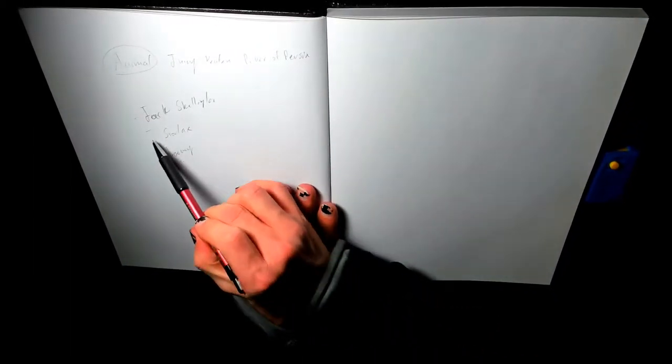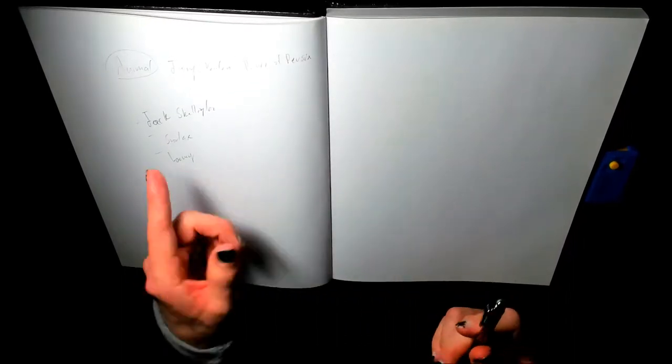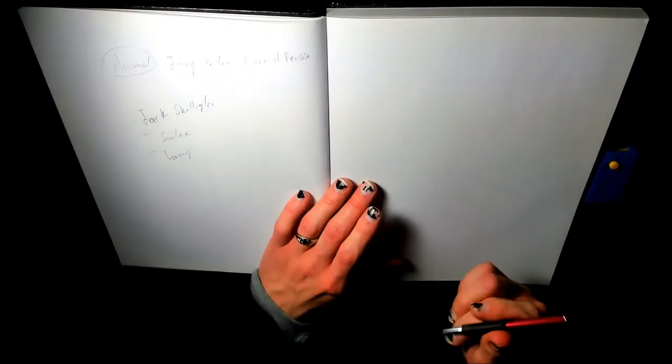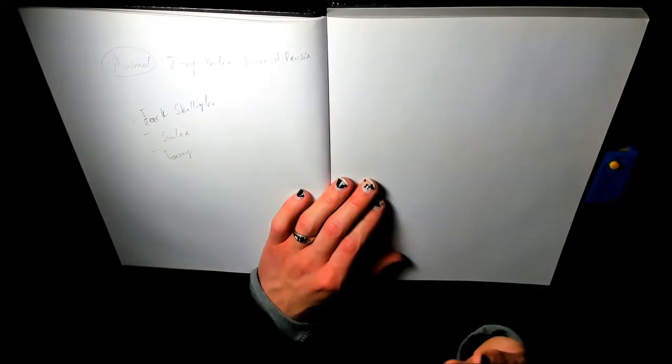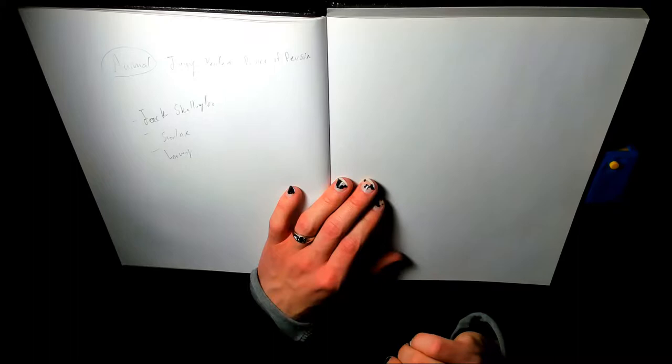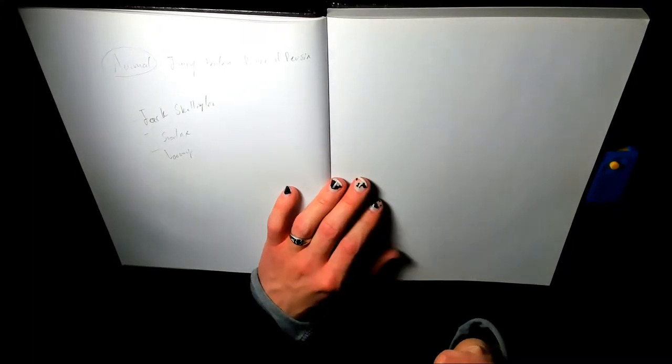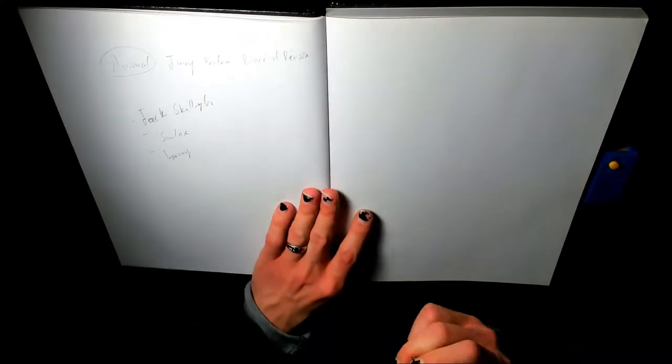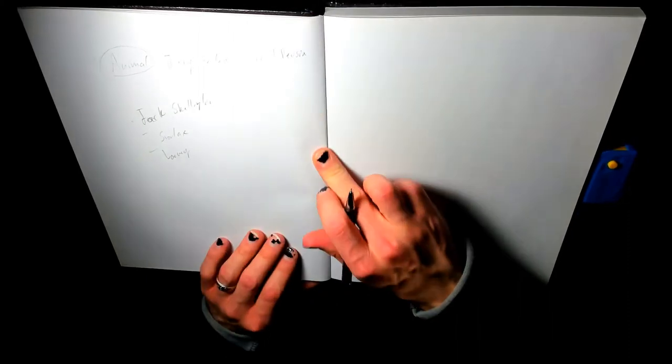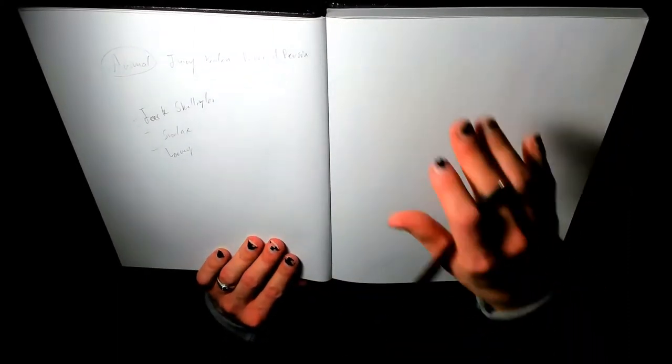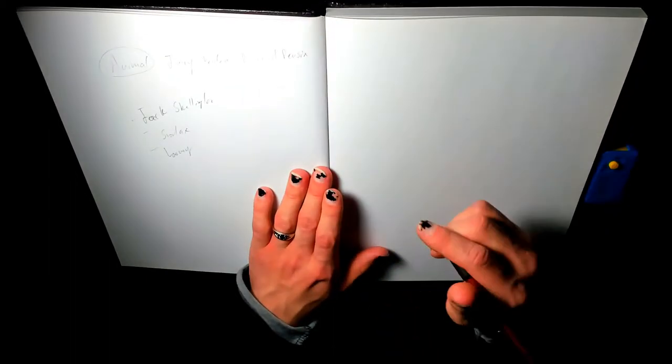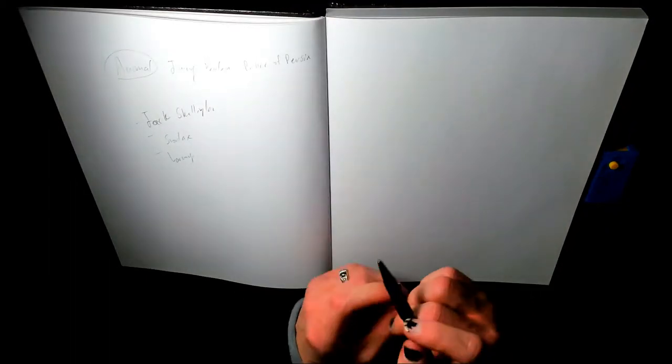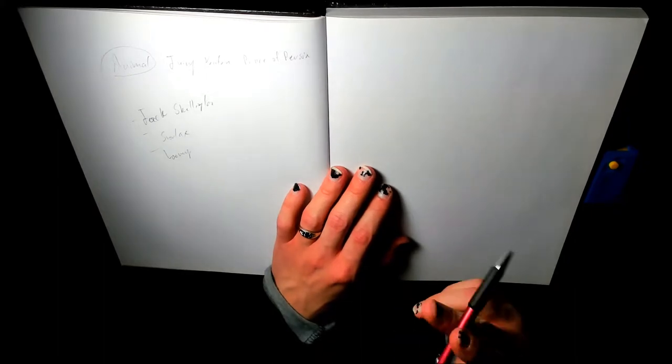So Jack Skellington and Snorlax were both suggested. So I'm just going to write them down here. I have them written down as well. I just want to remind myself of it. So we'll keep those there. And these will definitely be topics that we will do. Normal animal today. Let's get started with the first instruction.